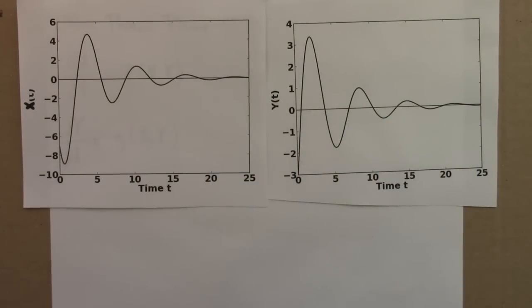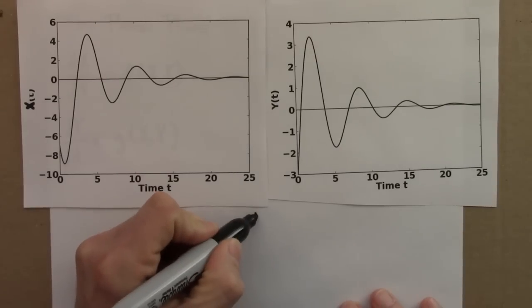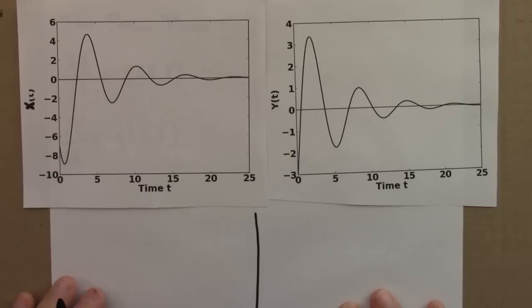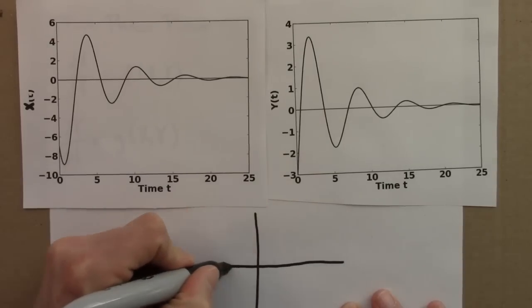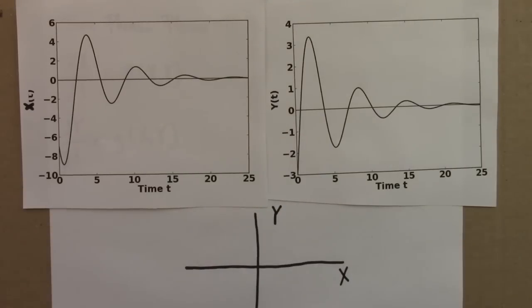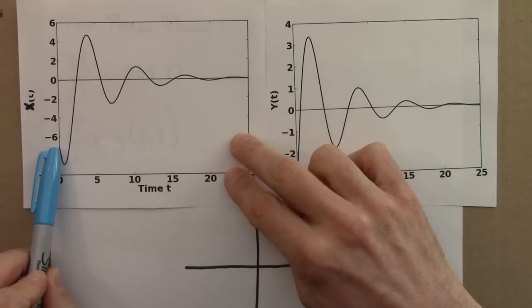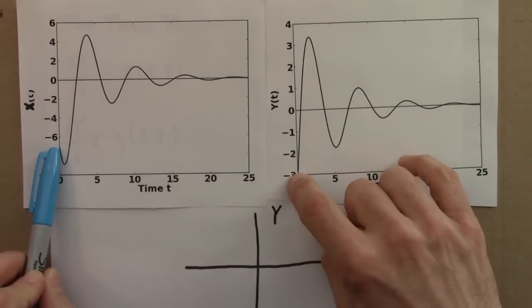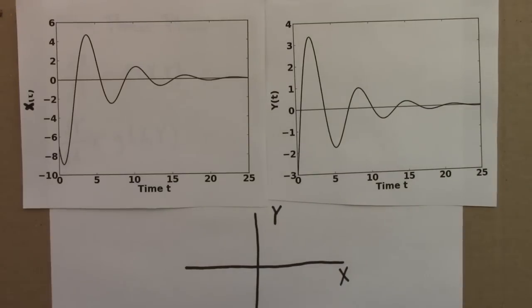So let me draw some axes first. So this is y and this is x. And I just want to get a general picture of the shape of this. So I start, initially x is minus 7 and y is minus 3. So x is minus 7, y is minus 3. That's going to put me somewhere over here. That's my starting point. So negative y, negative x.